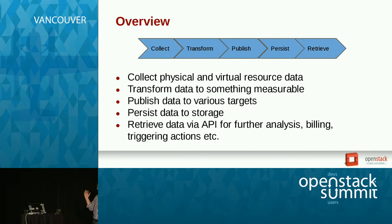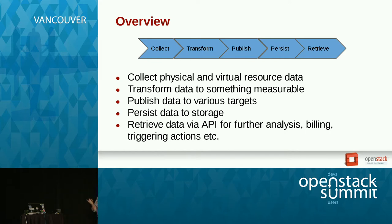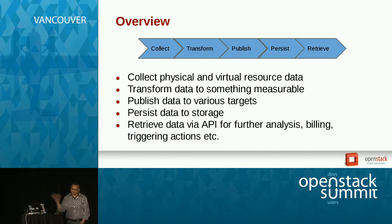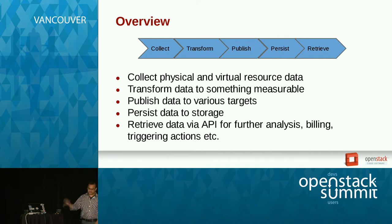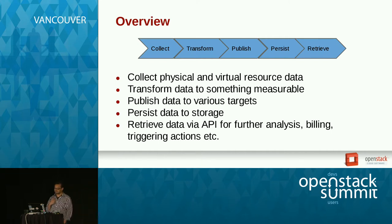Once you capture these resources into whatever data you want, if it's exactly what you need to persist and use, great. If not, you can use transformers to convert the data to something measurable. Next, we want to publish this data to various targets — multiple publishers that Ceilometer supports, like the HTTP publisher or, recently, we added a Kafka publisher. It could be as simple as a file or a Notifier publisher. We also want to persist this data and provide a REST API for further analysis, building pretty graphs, whatever you want to do.